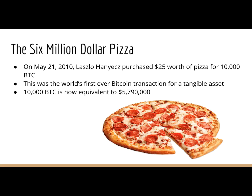Probably the most famous event of these two years was the six-million-dollar pizza, in which a guy named Laszlo Hanyecz on May 21, 2010, purchased $25 worth of pizza for 10,000 Bitcoin. This was the world's first ever Bitcoin transaction for a tangible asset. 10,000 Bitcoin is now equivalent to $5,790,000. It's really important to understand why this purchase was so important: before this purchase, most people involved in Bitcoin were hobbyists, and none of them believed you could use Bitcoin to purchase real-world goods. After this purchase, it became clear that Bitcoin is more than just a hobby — it was now an actual currency.